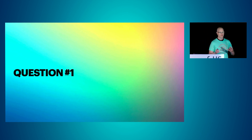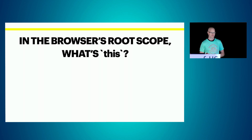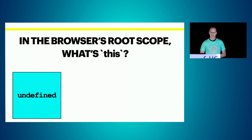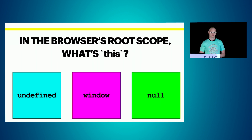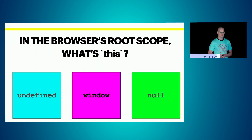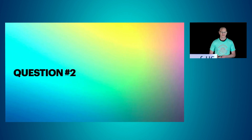Question number one: all of these questions are going to be within the context of a browser. So in the browser's root scope, what's 'this'? Is it undefined, is it window, or is it null? If you answered window, you get one point — congratulations.